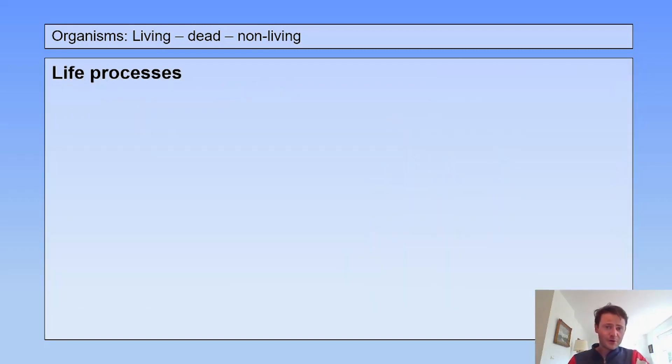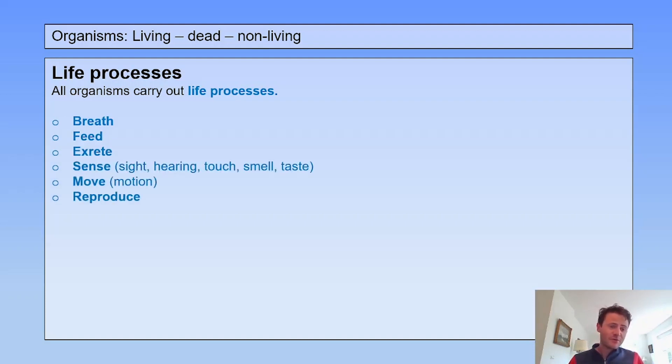And all organisms carry out life processes. These are things in which we can see if something is alive or not. We have seven of them. All organisms can breathe, they can feed, they can excrete, they can sense, they can move, they can reproduce, and they can grow. So these are the seven life processes.